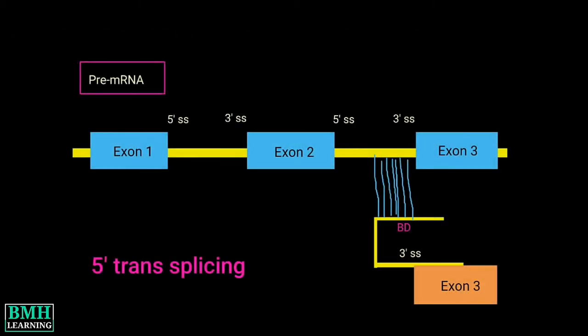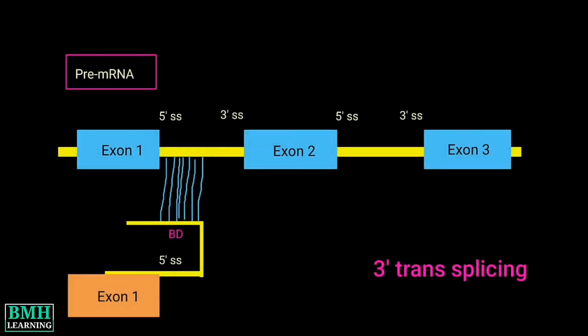Basically, the spliceosome uses the five prime splice site from one molecule and the branch point together with the three prime splice site from another molecule to ligate two exons from two different molecules.